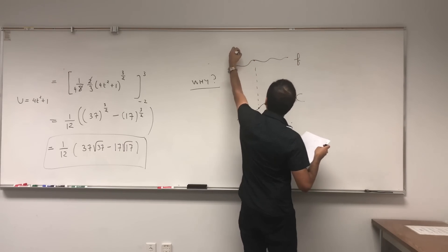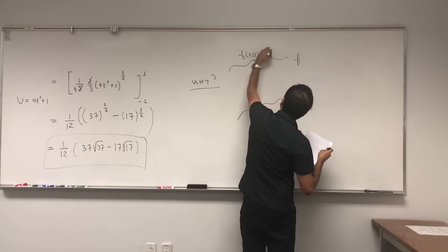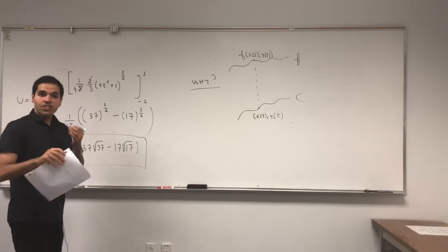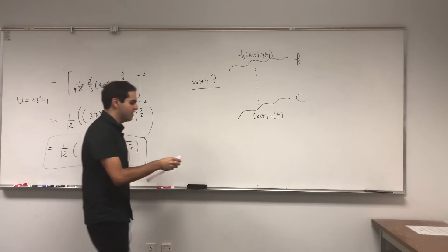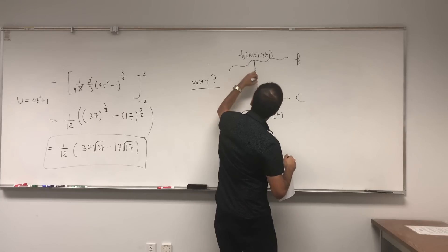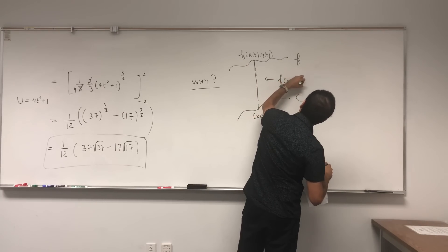What is the area under the function? Well, essentially the area is just integral of base times height. Well, the height in this case is f of x of t, y of t.